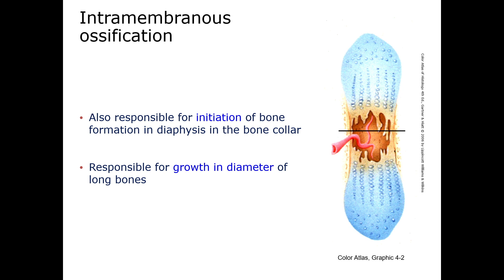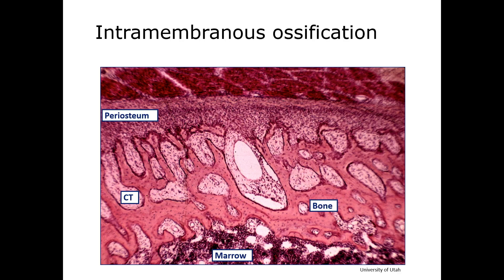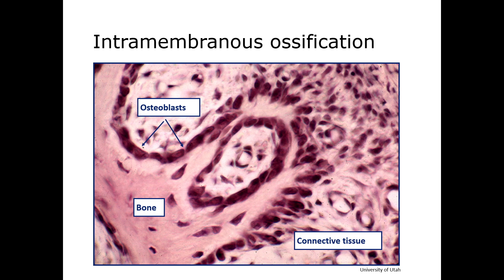Intramembranous ossification is critical for long bone growth as well, initiating bone formation in the perichondrium in the middle of the presumptive diaphysis, forming a bone collar. This process is also responsible for the expansion in width — appositional growth — of long bones. Here are two more images of intramembranous ossification, and you can note the position of osteoblasts on the endosteum, arising from osteoprogenitor cells in the mesenchyme.